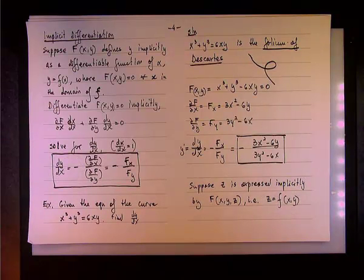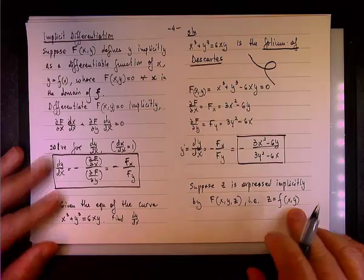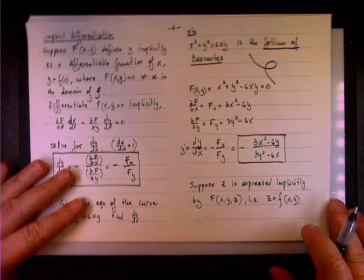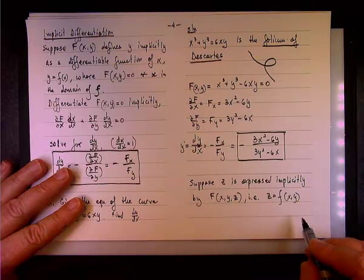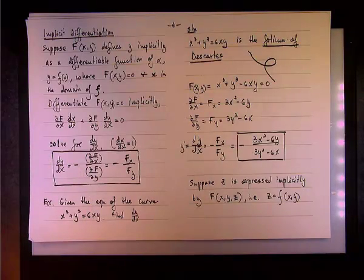So, x and y are independent, but Z is not, and we want to differentiate implicitly with respect to, we want to find the partial derivative of Z with respect to x and y, okay?